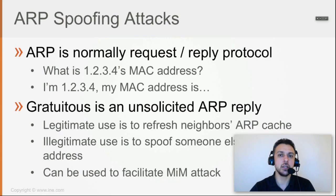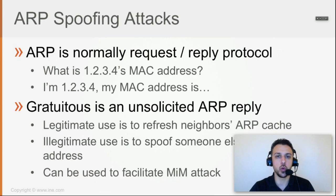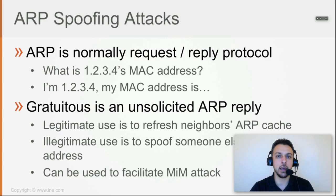For example, if there are 50 hosts in the network and everybody wants to speak with me and I'm in the same network, then instead of each of them having to send an ARP request to me and me having to reply, it's way better for me to just send a GARP saying 'this is my IP to MAC binding' — and that's it.